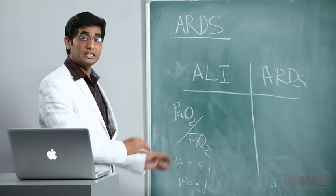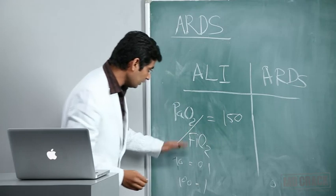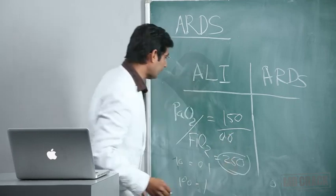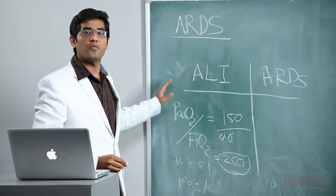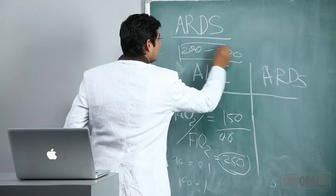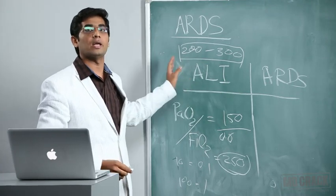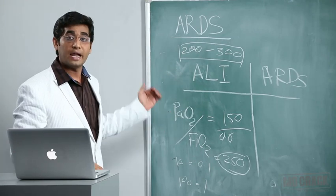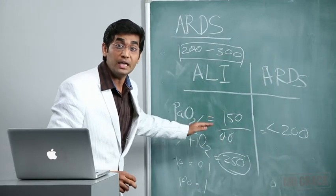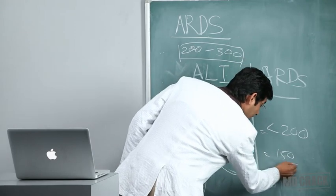If patient has PaO2 of 150 and FiO2 of 60% (0.6), the ratio is 250. When PaO2/FiO2 ratio is between 200-300, it's labeled acute lung injury - a less severe form, and these patients are at risk of developing ARDS. When this ratio is less than 200, it defines ARDS. For example, PaO2 of 150 with 100% oxygen gives ratio of 150 - that patient is in ARDS.